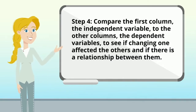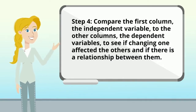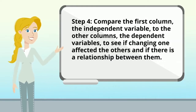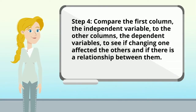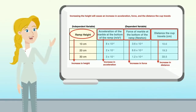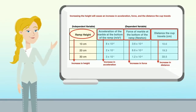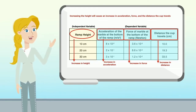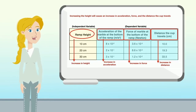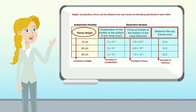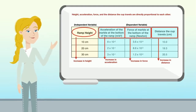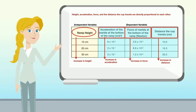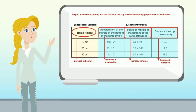In step four, we're going to compare the first column — the independent variable — to the other columns — the dependent variables — to see if changing one affected the others and if there's a relationship between them. Increasing the height causes an increase in acceleration, force, and the distance the cup travels. Height, acceleration, force, and the distance the cup travels are directly proportional to each other.